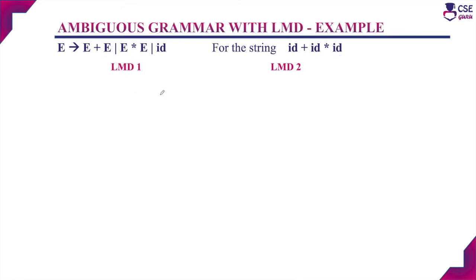Next, example for ambiguous grammar with more than one leftmost derivation. The given grammar is E → E + E | E * E | id, and we are going to derive the string id + id * id. We will show two different leftmost derivations for deriving the same string.